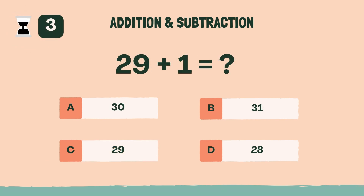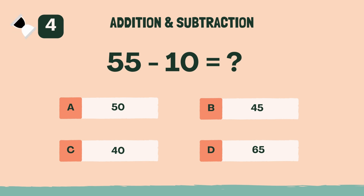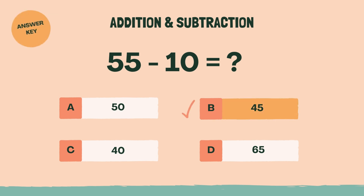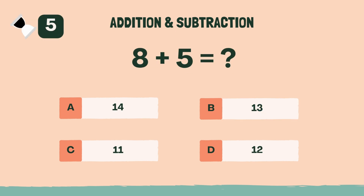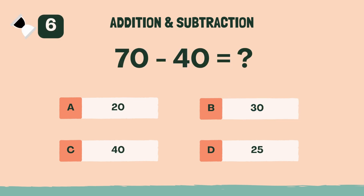What is 29 plus 1? A, 30. What is 55 minus 10? B, 45.